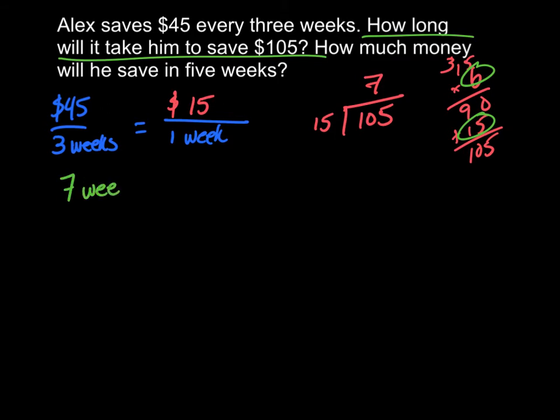And I can check that again. 15 times 7 gives me 5, carry the 3, so I have $105 in 7 weeks. Find the unit rate, and then you can multiply or divide it out from there.